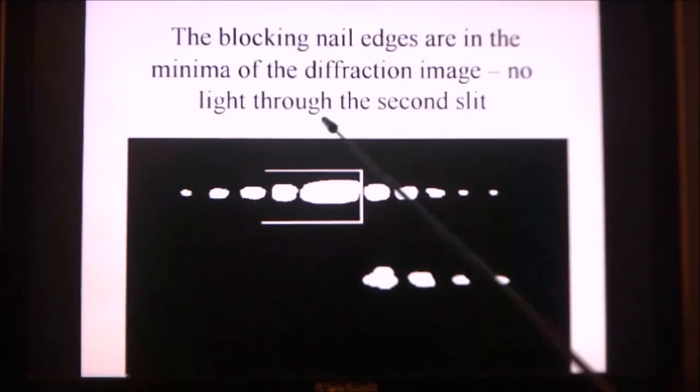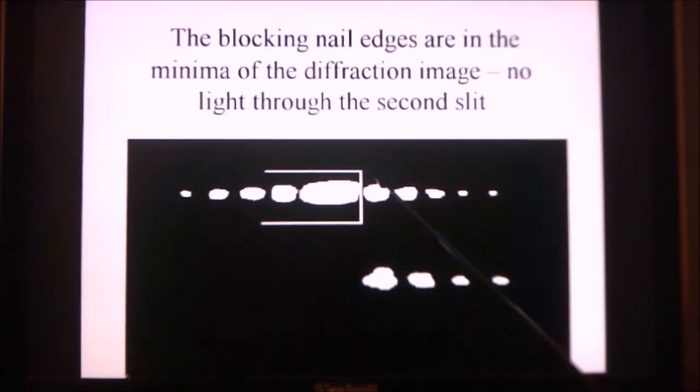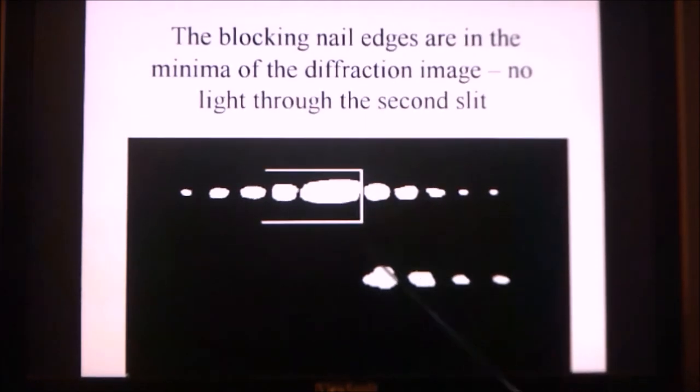But this is what happens when you put the edge of a blocking mask at the minima of a diffraction pattern. What you see here, there's a very small amount of light that comes right just inside the mask here, and then the rest of the diffraction pattern follows. The point is that where the center peak used to be, there's no light, that's to say the first minima are on each side of the nail.